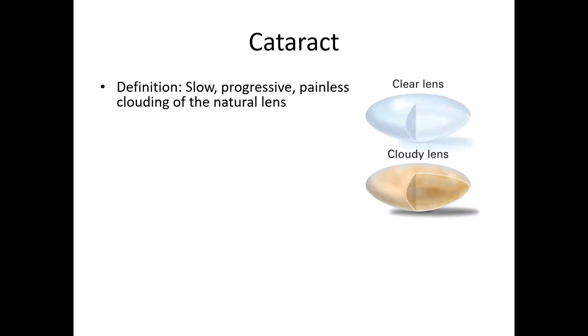So how is it that a cataract causes sudden vision loss? A cataract is defined as a slow, progressive, painless clouding of the natural lens. Shown on the right is a clear lens, similar to one that we are born with, and on the bottom is a cloudy lens that occurs over time and with age. It is a natural process.